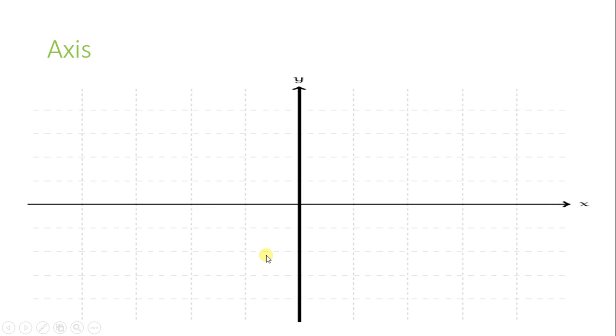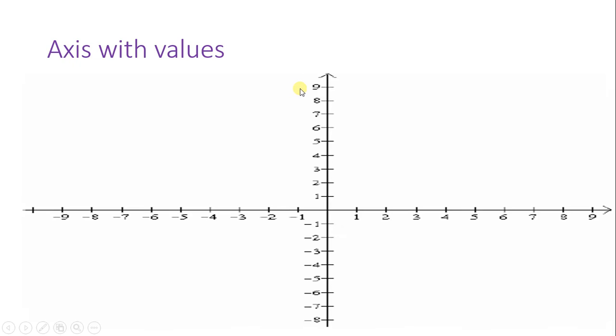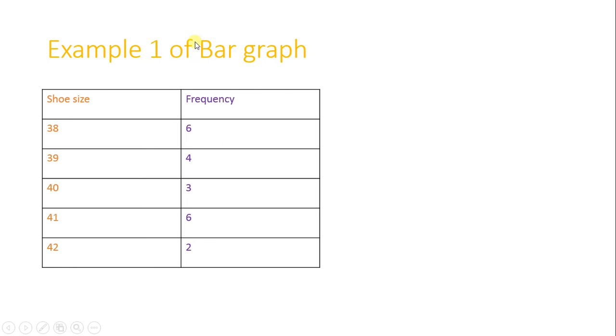So as we have an x-axis and y-axis, we will put some values on it. These are the positive values of x-axis and these are the negative values of x-axis. These are the positive values of y-axis and these are the negative values of y-axis.